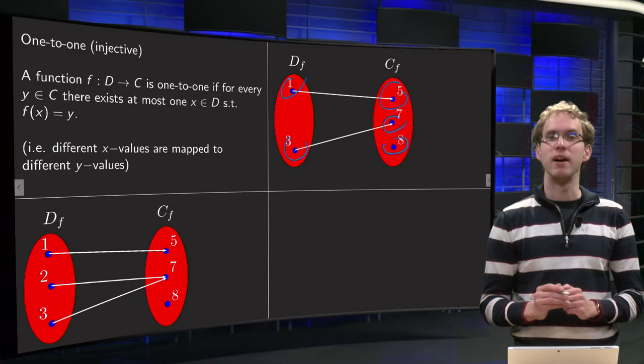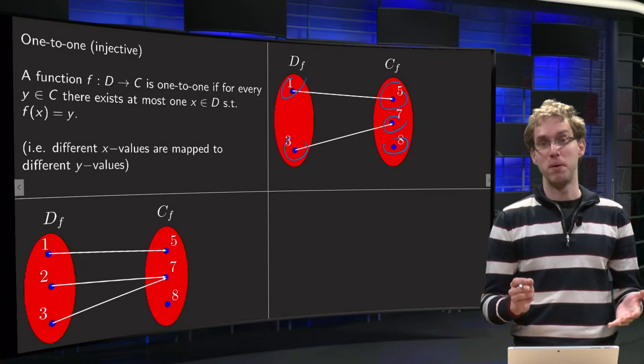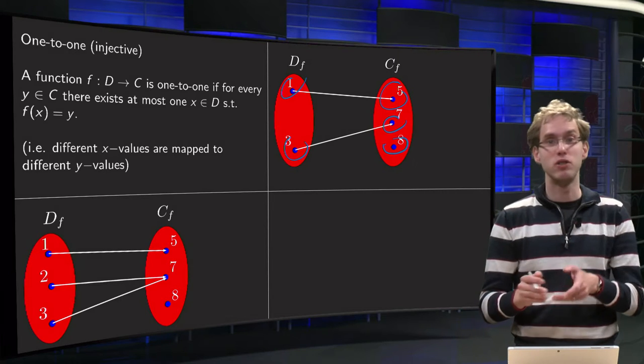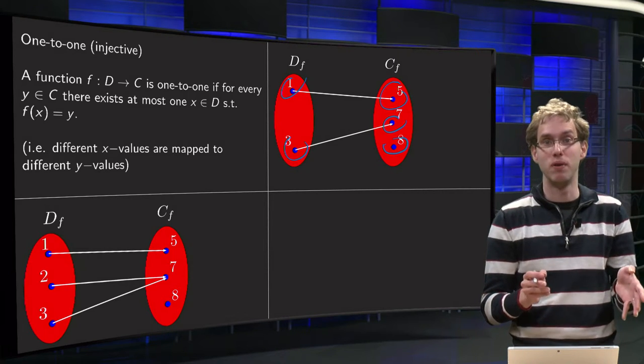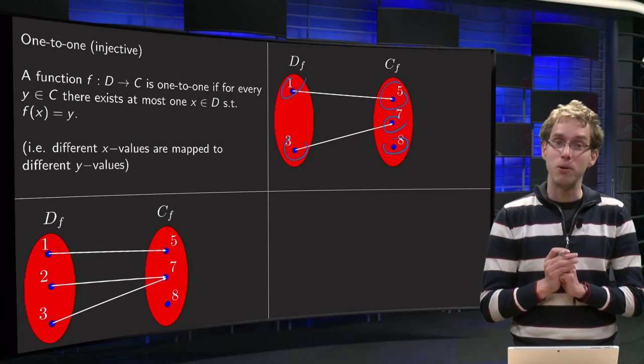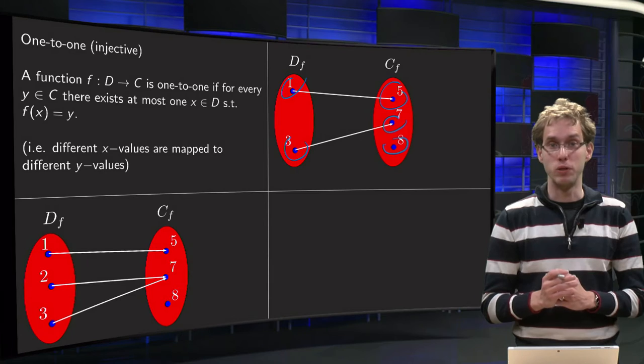And finally eight over here, well no value is mapped to eight. You can have at most one value mapping to eight, so zero is at most one, so even less, so that's fine as well. So now this function is one-to-one.